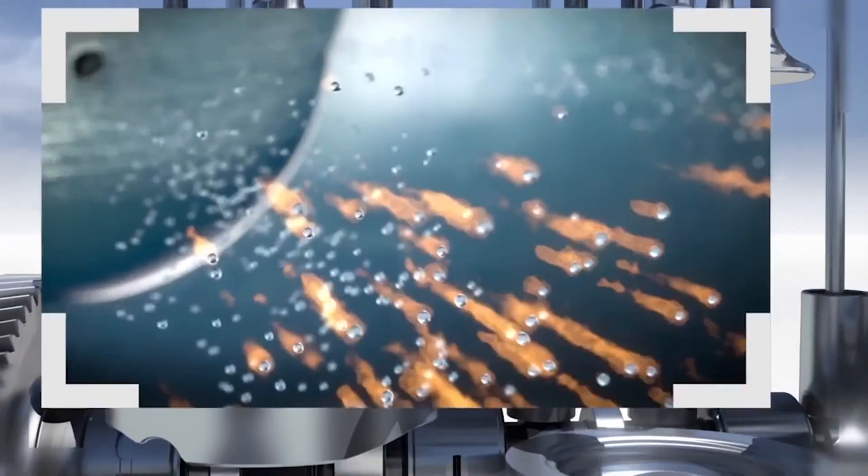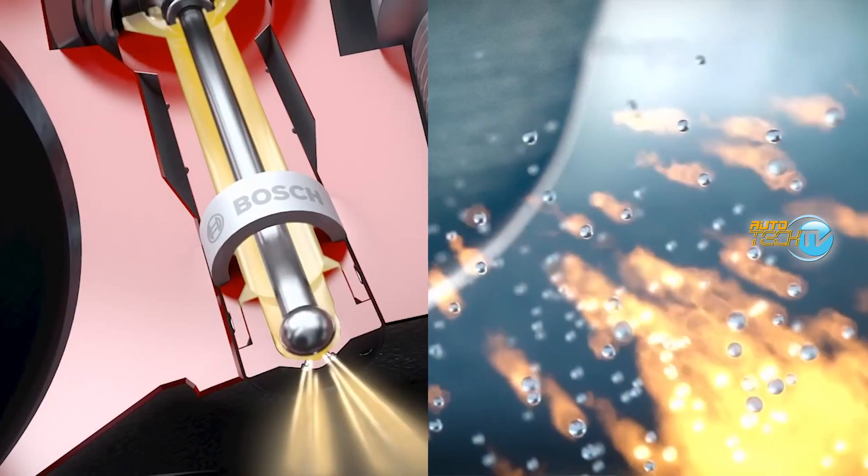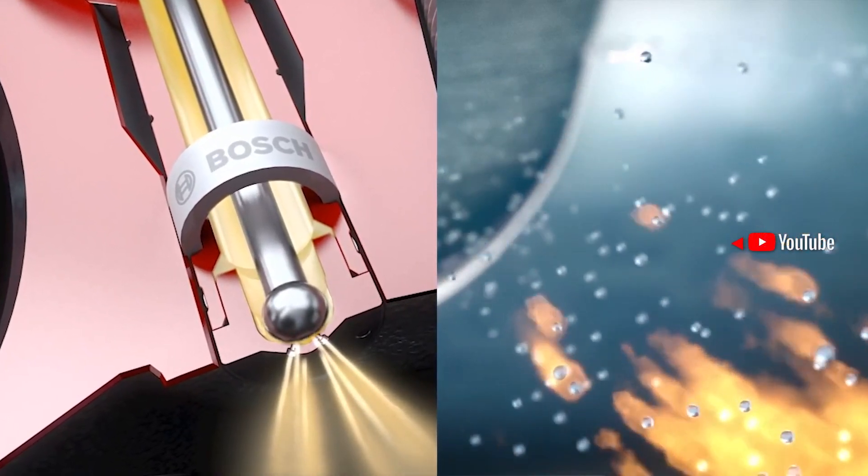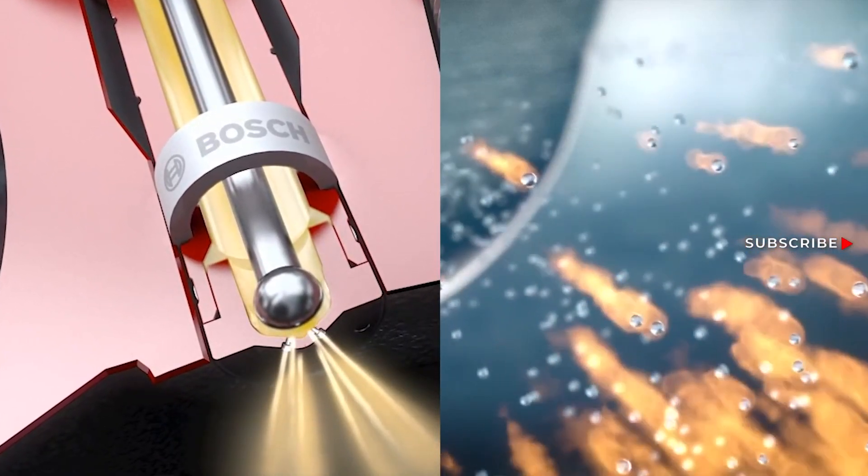But fundamentally, why such pressure? Why are we using 2500 kilograms per square centimeter? The main explanation for that is that if you pass a liquid through a very small opening at high pressure, it gets atomized.